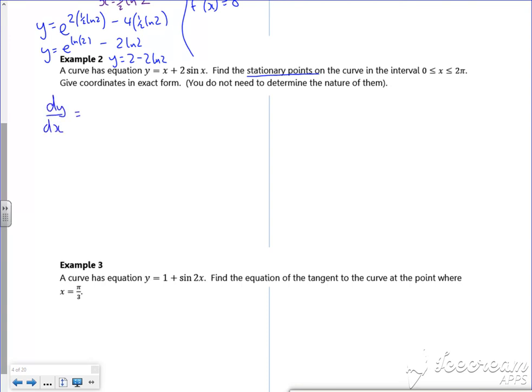So x becomes a 1. Remember if you're doing anything with sine, cos or anything like that, always draw your little clock face. So sine goes to cos, so that's 2cos(x). We know it's stationary when dy/dx equals 0. So I've got 1 plus 2cos(x) is 0. Take the 1 across and divide by 2.